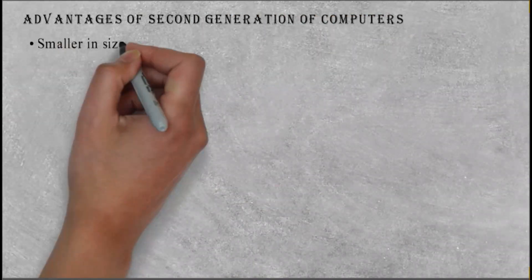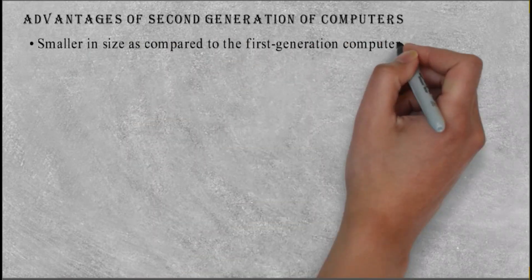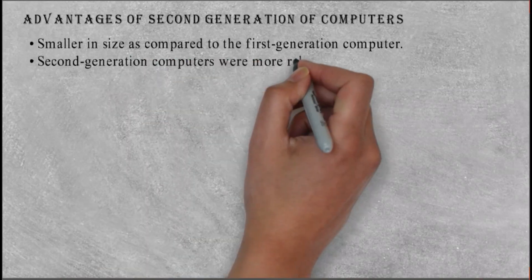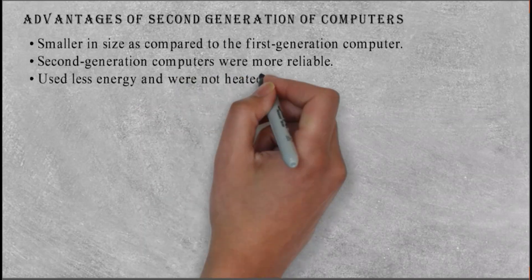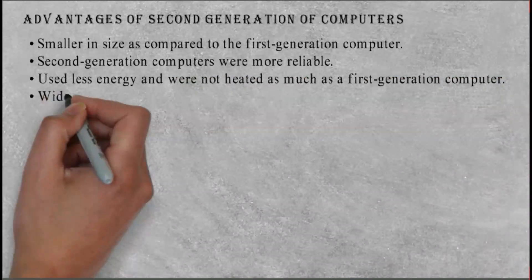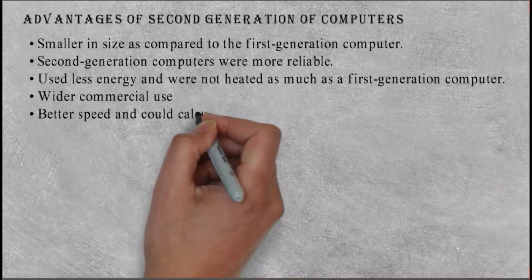Advantages of second generation of computers: Smaller in size as compared to the first generation computer. Second generation computers were more reliable. Used less energy and were not heated as much as first generation computers. Wider commercial use. Better speed and could calculate data in microseconds.